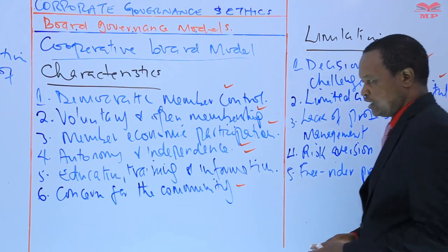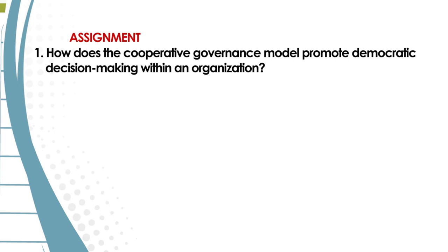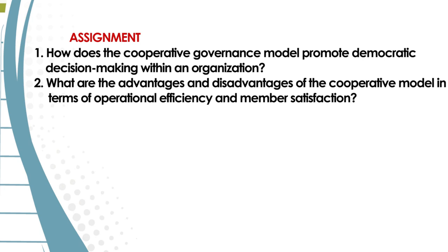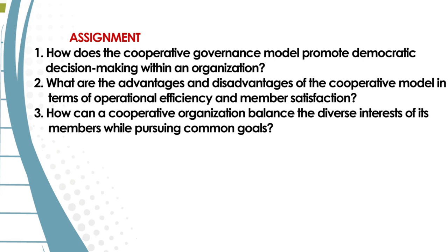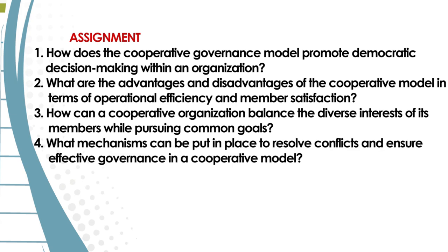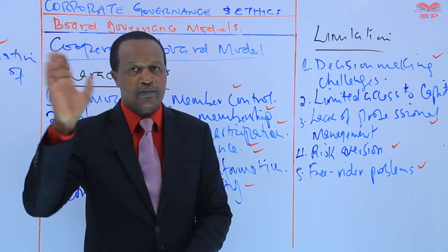Before we take a break, allow me to read out today's assignment. I have four questions for you. Number one: how does the cooperative governance model promote democratic decision making within an organization? Number two: what are the advantages and disadvantages of cooperative models in terms of operational efficiency and member satisfaction? Number three: how can a cooperative organization balance the diverse interests of its members while pursuing common goals? Number four: what mechanisms can be put in place to resolve conflicts and ensure effective governance in a cooperative model? Thank you for attending the lesson. In our next session, we are going to study the management team model. Bye-bye.